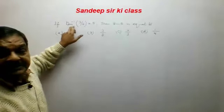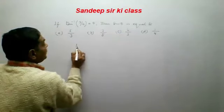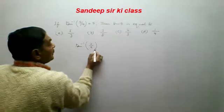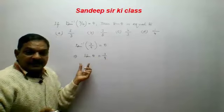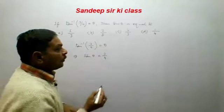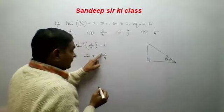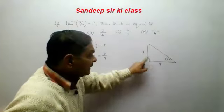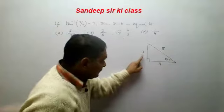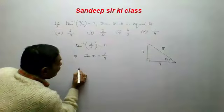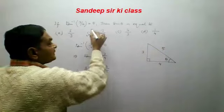The question is: if tan⁻¹(3/4) = θ, then sinθ equals what? From the definition of the inverse function, tan θ = 3/4. Drawing a right-angle triangle with perpendicular 3 and base 4, by Pythagoras theorem the hypotenuse is 5. Therefore sin θ = perpendicular/hypotenuse = 3/5. Option B is correct.